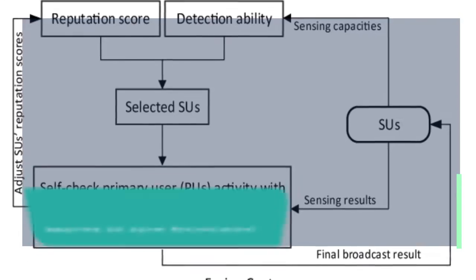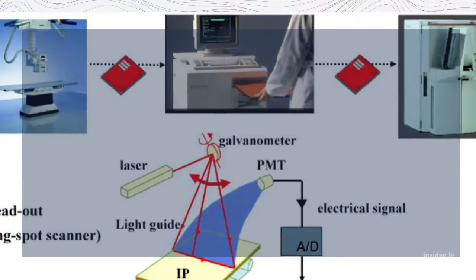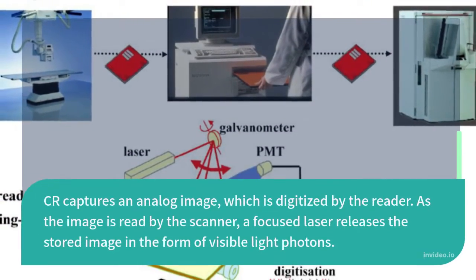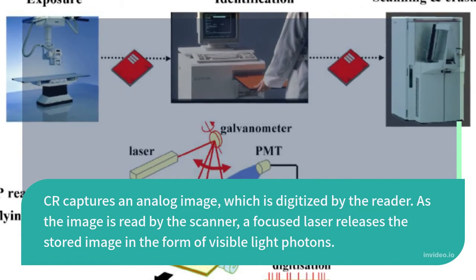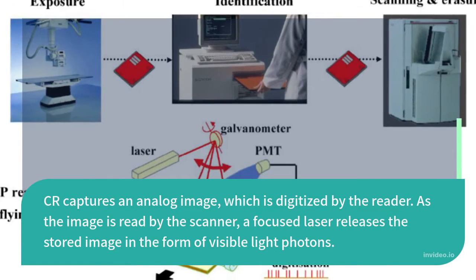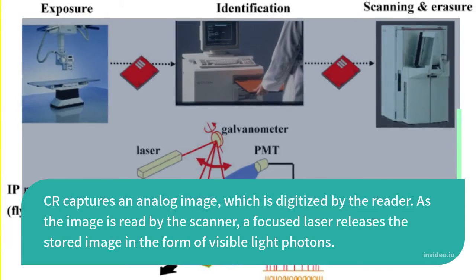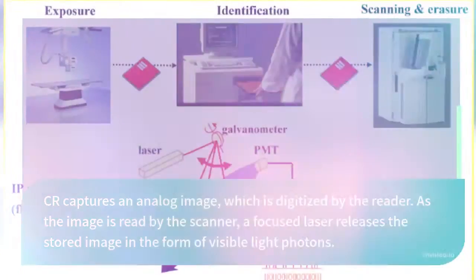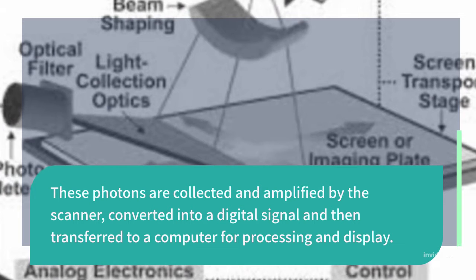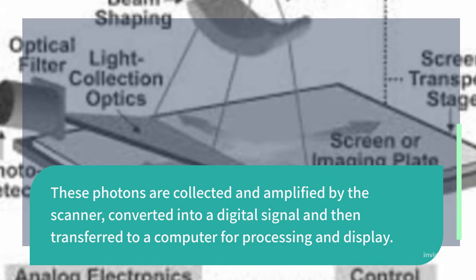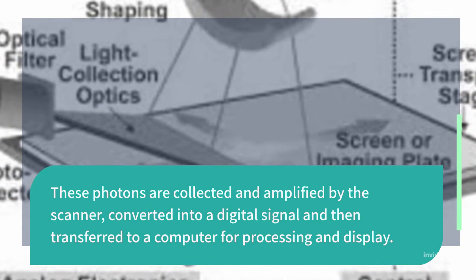What is the process of the CR system? CR captures an analog image, which is digitized by the reader. As the image is read by the scanner, a focused laser releases the stored image in the form of visible light photons. These photons are collected and amplified by the scanner, converted into a digital signal, and then transferred to a computer for processing and display.